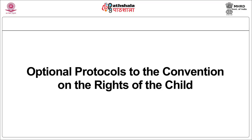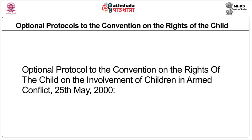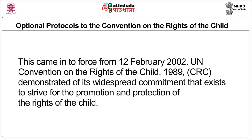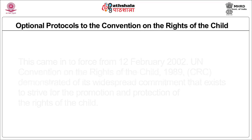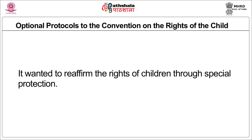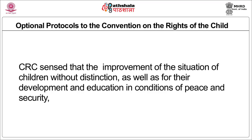Let us see the optional protocols that came as intervention to do justice. The First Optional Protocol to the Convention on the Rights of the Child on the involvement of children in armed conflicts came into existence on 25th May 2000 and into force from 12th February 2002. The UN Convention on the Rights of the Child 1989 demonstrated its widespread commitment to strive for the promotion and protection of the rights of the child, reaffirming children's rights through special protection and ensuring improvement of the situation of children without distinction, as well as their development and education in conditions of peace and security.